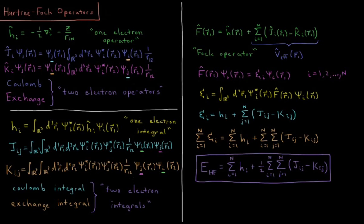These are our one-electron integrals and two-electron integrals, which arise from our one-electron operator and two-electron operators. We can now combine these to develop what is called the Fock operator. The Fock operator for electron 1 is equal to the one-electron operator for electron 1, plus the sum over all electrons from i equals 1 to n of the Coulomb operator for electron 1 minus the exchange operator for electron 1. This sum in parentheses represents the effective mean field operator discussed earlier in our Hartree-Fock videos on helium.